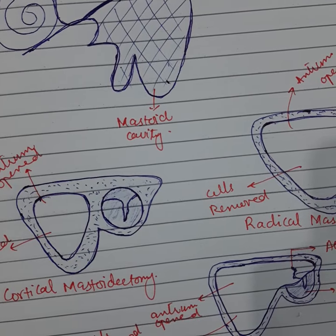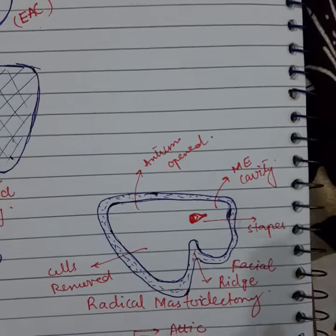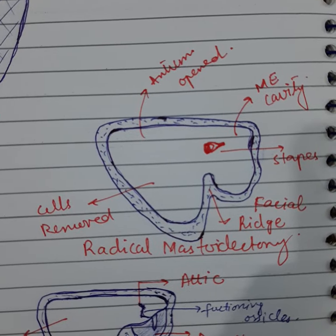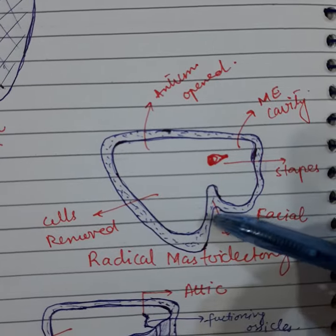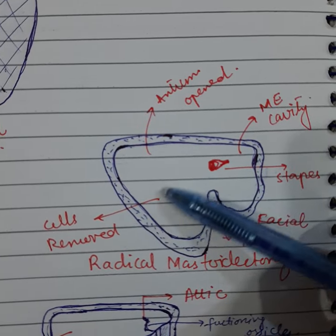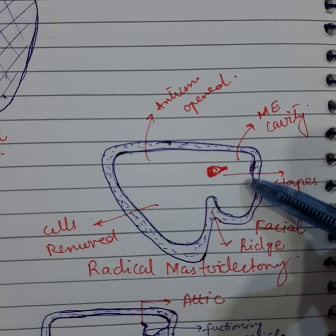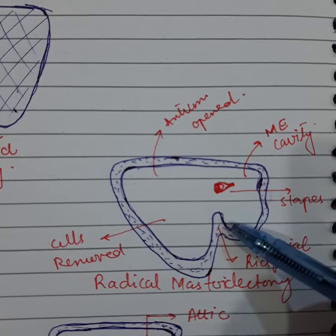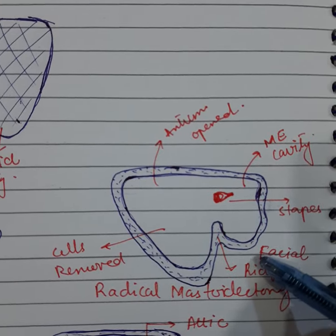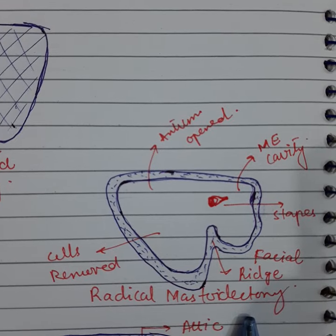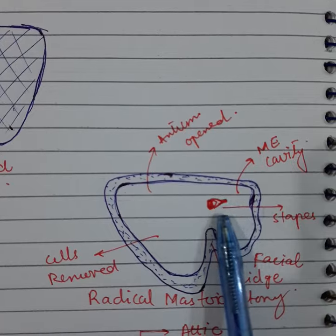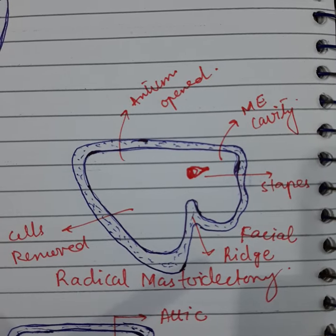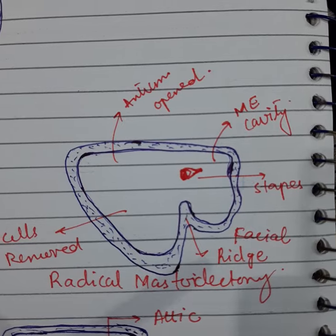Now coming towards radical mastoidectomy — in this case, the disease is eradicated from both the middle ear and the mastoid. The posterior meatal wall is removed and the whole area — the middle ear, attic, drum, and mastoid — is converted into a single cavity. There is no attempt to reconstruct hearing. All remnants of the tympanic membrane, ossicles, and mucoperiosteal lining are removed, except the stapes footplate which is preserved. The eustachian tube is obliterated by a piece of muscle or cartilage.